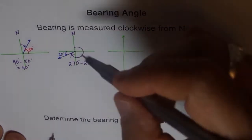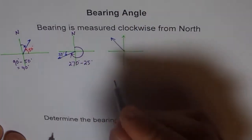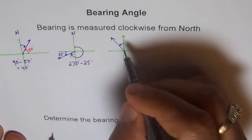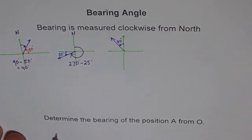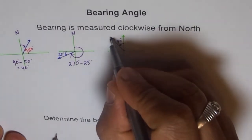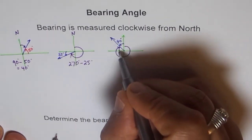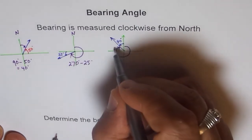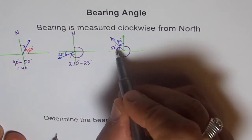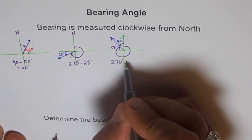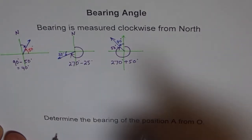Now let's take a direction in quadrant 2. From here, let's say this angle is 40 degrees. In that case, what is my angle of bearing? My angle of bearing for this point will be 270 plus 90 minus 40. If this is 40, then this is 50. So the total angle will be 270 plus 50. So I get 270 degrees plus 50 as my angle of bearing.